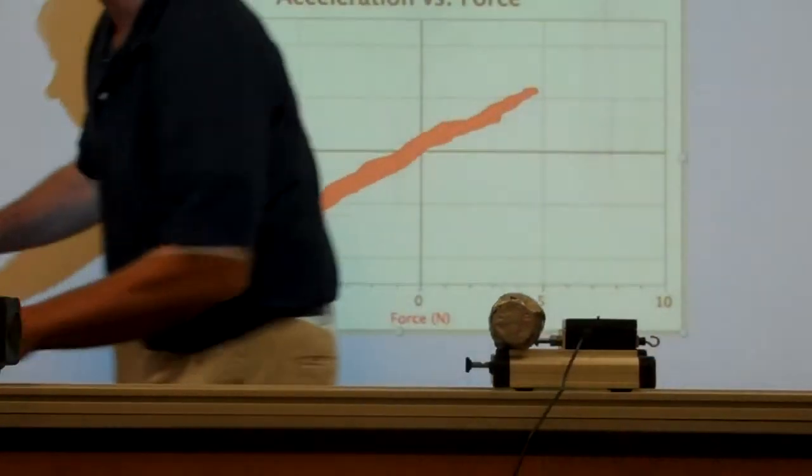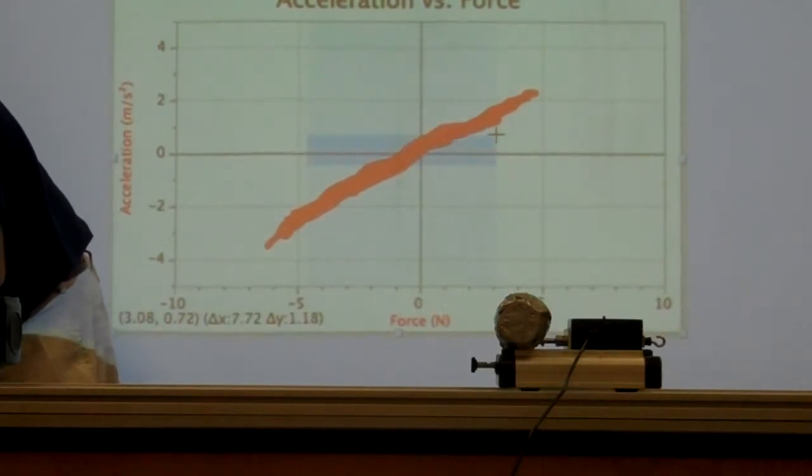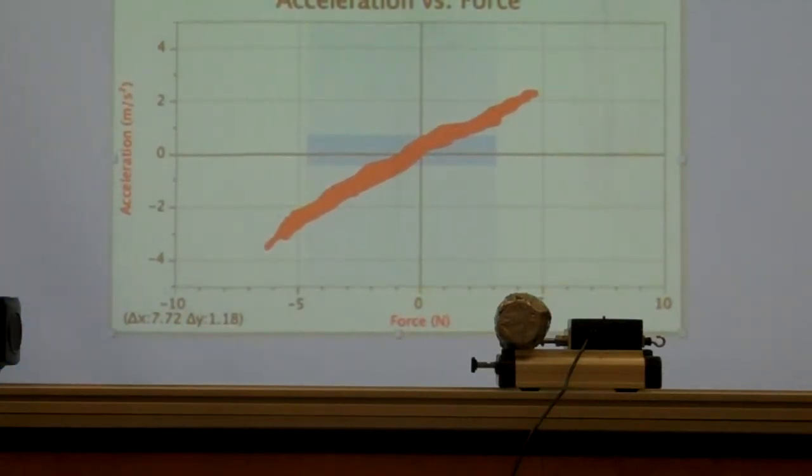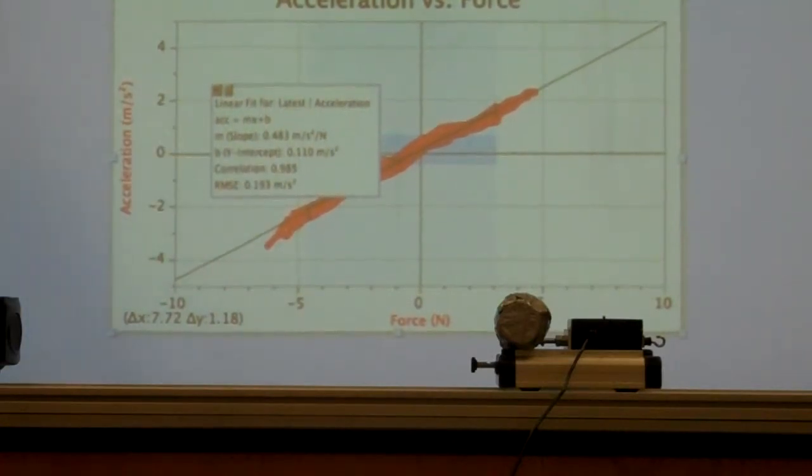And now I'm going to analyze that data to find out the slope of this graph. So I highlight a section of that line, and then I click the Find Me The Slope button, and it tells me the slope of this graph is 0.483 meters per second squared per newton. That's 0.483 is the slope of this second graph.